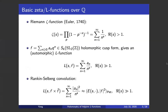Let's start with basic zeta functions. The first is your favorite Riemann zeta function. It's defined by an Euler product or Dirichlet series converging absolutely in some right half plane, and it has meromorphic continuation with a simple pole at s equal to 1. That's the most famous zeta function. You also have other zeta functions for L-functions in general.